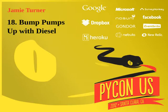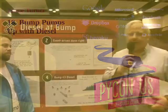We're here with Jamie Turner to discuss Diesel at Bump. Diesel is a framework for writing network applications in a non-blocking style. In some ways it's similar to Twisted or G-Event or something like that. It's especially similar to G-Event in that it's coroutine-based.